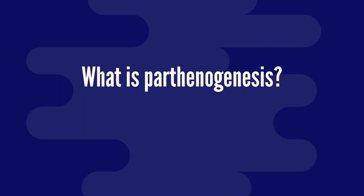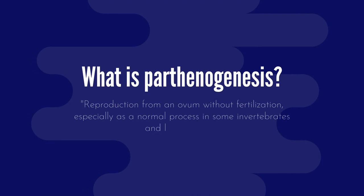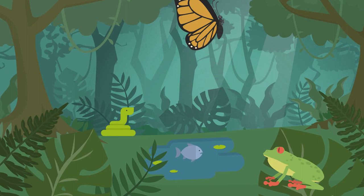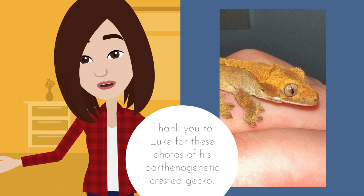So what is Parthenogenesis? This is a form of asexual reproduction, defined as reproduction from an ovum without fertilization, especially as a normal process in some invertebrates and lower plants. However, Parthenogenesis is not limited to inverts and lower plants, as it has been observed in more than 80 vertebrate species, including reptiles and fish. Some of my own audience have had female crested geckos produce offspring without ever being near a male.